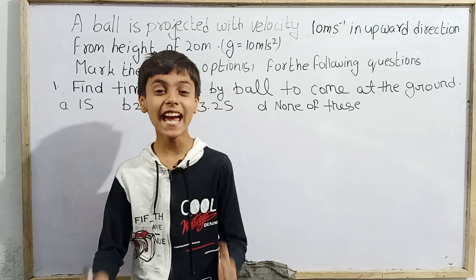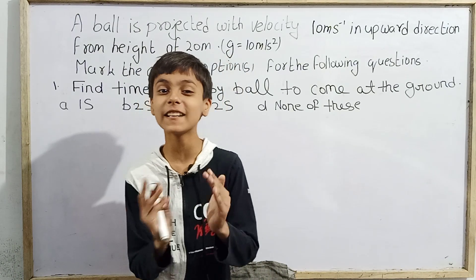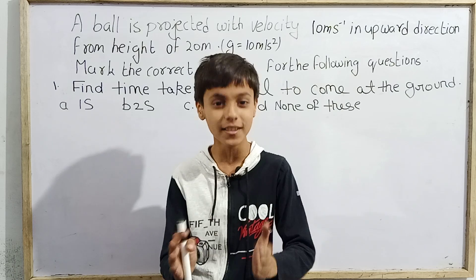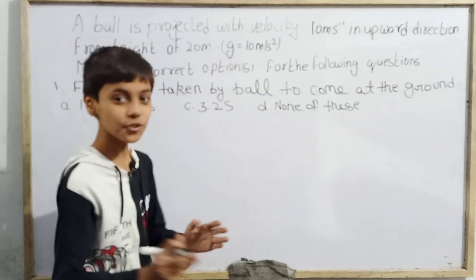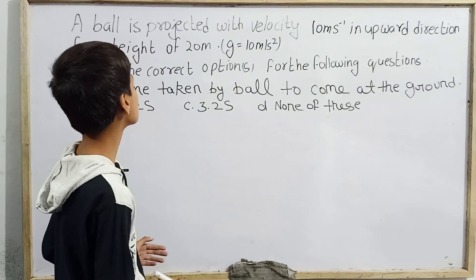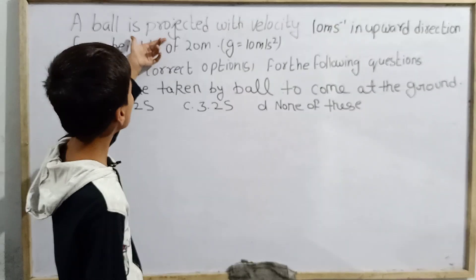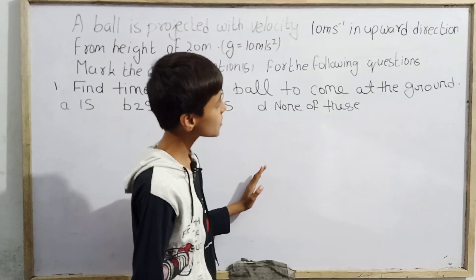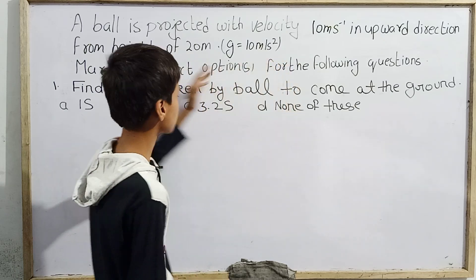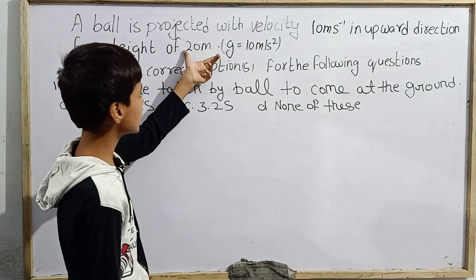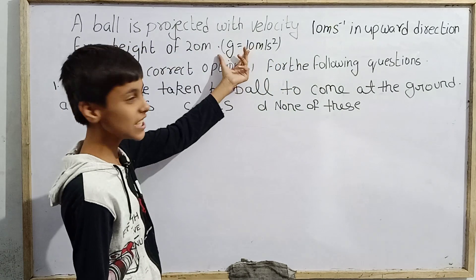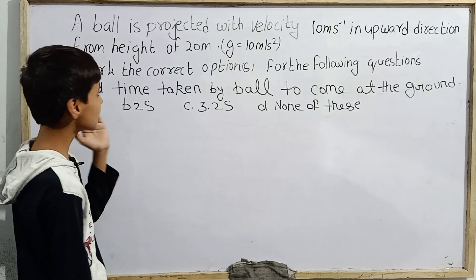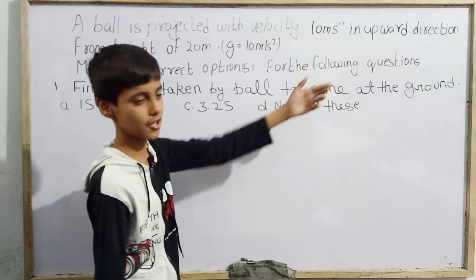This is Sarim Khan and today I am back with a new question on kinematics for JEE Mains. Today's question asks us that a ball is projected with velocity 10 meters per second in the upward direction from a height of 20 meters, with G equals 10 meters per second squared. Mark the correct options for the following questions.